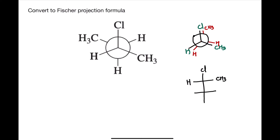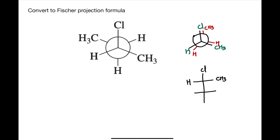On the left is hydrogen. This CH3 on the back carbon — when I look at that carbon, it is attached to a CH3, H, and H. But this CH3 should be placed at the bottom of the Fischer projection formula, meaning that it is away from us. The two hydrogens will take the left and right positions. Now we have the proper Fischer projection formula.